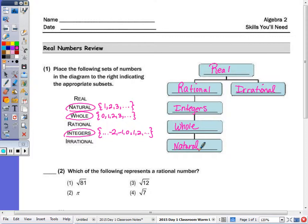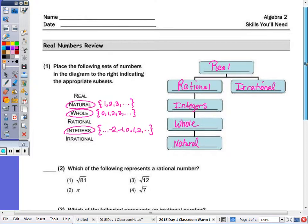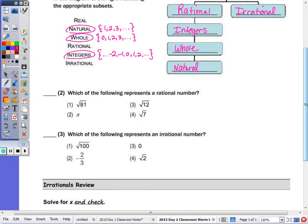Number two, which of the following represents a rational number? So if we take a look at each of the numbers, the square root of 81 is 9, that's a terminating decimal. Remember, your rational numbers are your terminating or repeating.